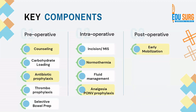In the postoperative phase, early mobilization and early removal of the nasogastric tube and drains are essential. We no longer follow the old practice of keeping the nasogastric tube for 5 days or drains for 5–7 days. Even after a Whipple procedure, the nasogastric tube is typically removed on day 2 and liquids are started by day 2 or at most day 3.